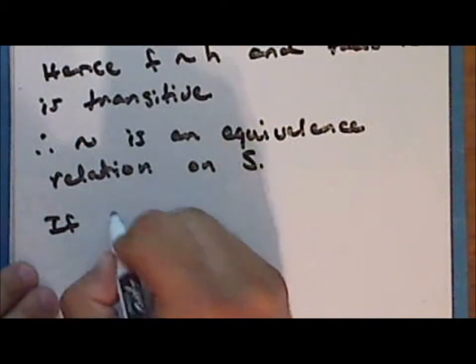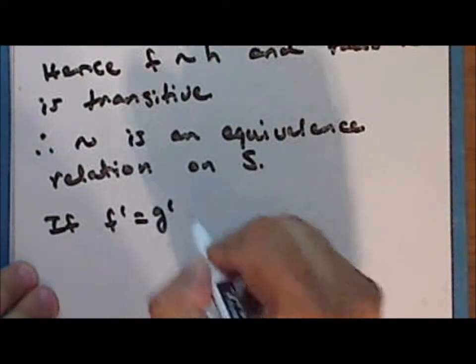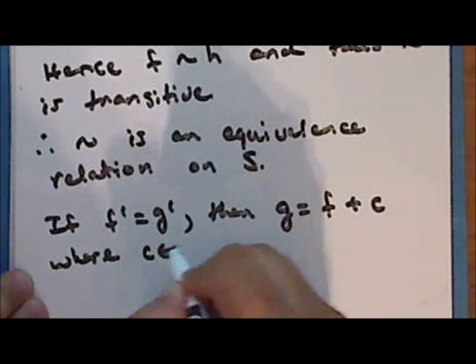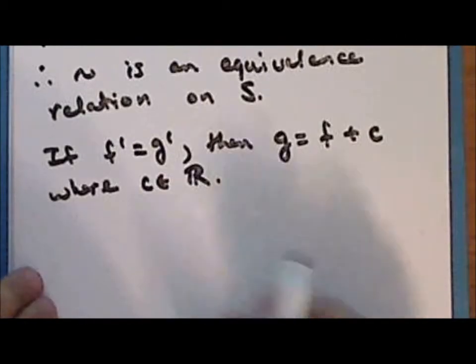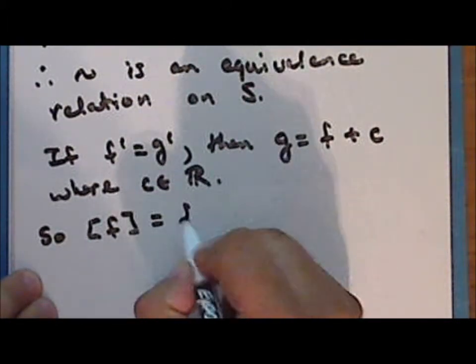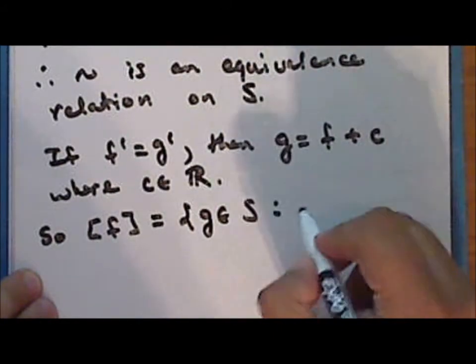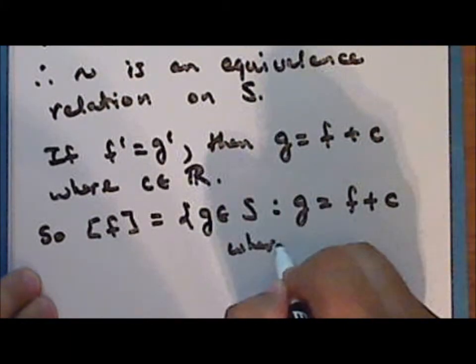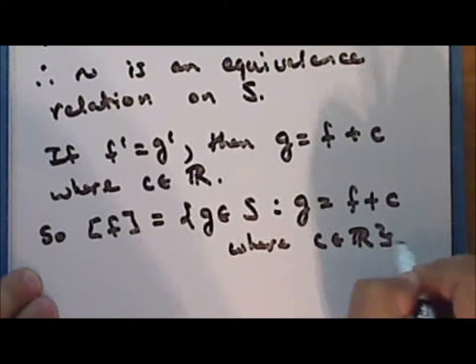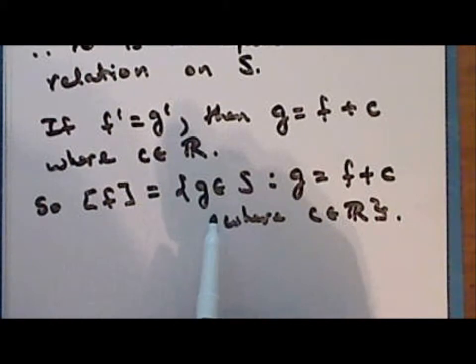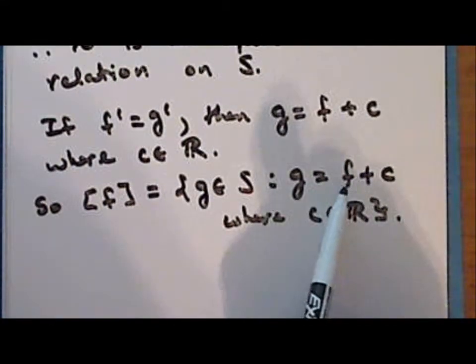Now if F prime is equal to G prime, then G is equal to F plus C, where C is a real constant. And so the equivalence class containing F is the set of all the polynomials in S that differ from F only by a constant.